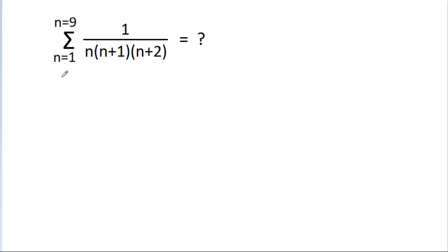In this video, we have to find the summation from n equal to 1 to n equal to 9 of 1 divided by n times (n+1) times (n+2). Here, n, n+1, and n+2 are in increasing order.